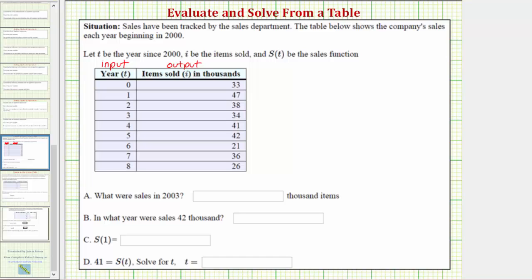Looking at part a, we're first asked, what were the sales in the year 2003? You need to recognize that for the year 2003, because 2003 is three years after the year 2000, the year 2003 is represented by the value t equals three. So looking at the first column, notice how here's where t equals three, and when t equals three, the items sold in thousands is thirty-four.